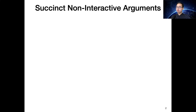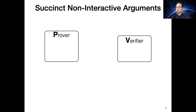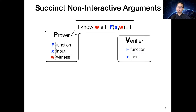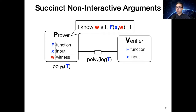Before we talk about pre-processing SNARKs, let's first take a look at succinct non-interactive arguments. We have the prover and verifier. The prover has a specific function that is applied to a public input and private witness. The prover wants to convince the verifier that it knows the secret witness so that the function can be satisfied. The prover runs in time proportional to the computation time, but the proof that the prover sends to the verifier is exponentially smaller than the computation itself.